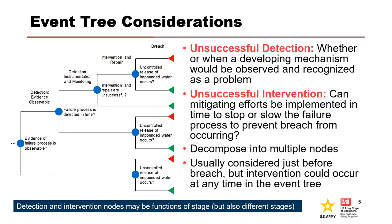This node considers the likelihood that human efforts to detect and stop or slow the internal erosion process from breaching the event fail to work. Unsuccessful detection and intervention can be assessed as a single node or can be decomposed into multiple nodes. Intervention nodes may be functions of different stages.